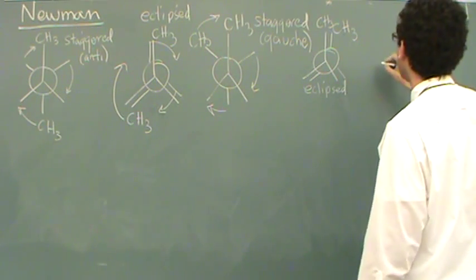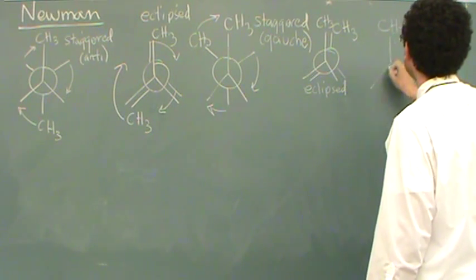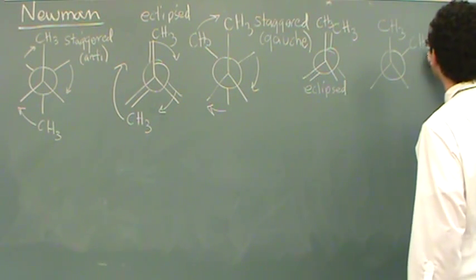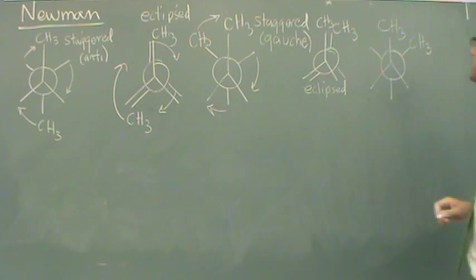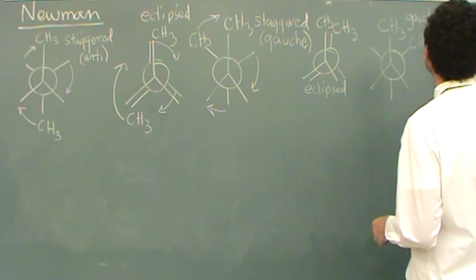If you rotate one more time, we keep the front the same, and then the back looks like this. We're back to a staggered gauche position.